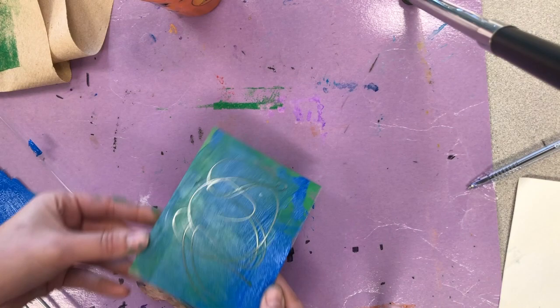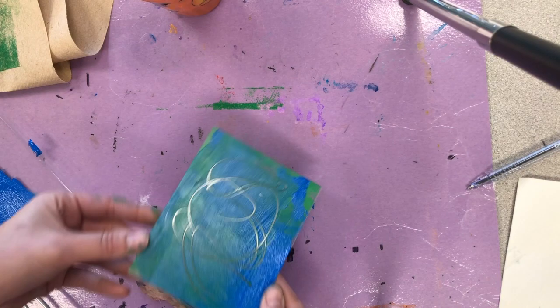Designing it however you want, getting your paper, putting it on your paper, pressing down, counting to 30, and then pull it up. See how that one turned out much better. This will need to be cleaned then.